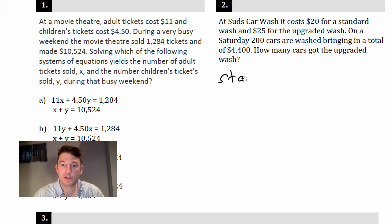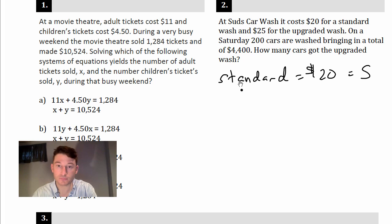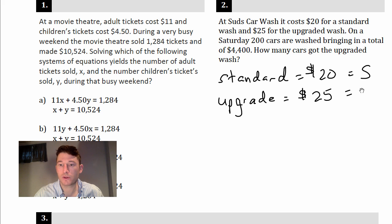Okay, so let's again identify variables. $20 for a standard, so I'll write standard equals 20 bucks and we'll call that variable S. And then upgrade equals $25 and we'll call that variable U. On a Saturday, 200 cars are washed, so let's start there.